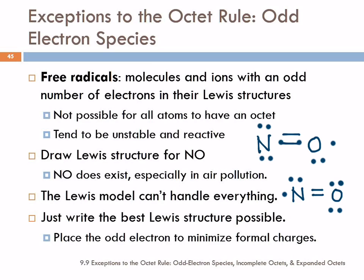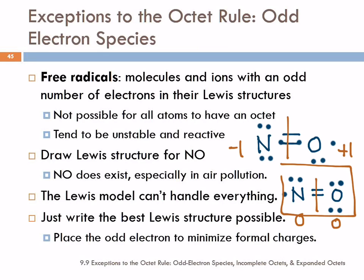On this nitrogen, what's the formal charge? Negative one. It's got six electrons, it came with five, so five minus six is negative one. And the formal charge on the oxygen? It's got five, it came with six, so it's plus one. Now let's compare the other structure — formal charge on this nitrogen is zero, because it has five. Formal charge on the oxygen is also zero. So this is the winning Lewis structure, even though it violates the octet rule. An odd electron always has to violate the octet rule.